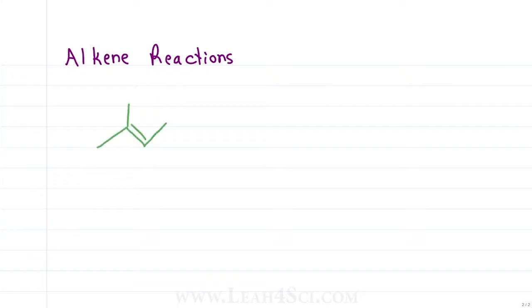We'll start with alkene reactions, where an alkene is a molecule that has a double bond between two carbon atoms, and in this reaction we break the pi bond and add something across those two carbons.